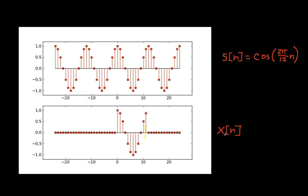Now when we do this windowing, the spectrum, or the Fourier transform of X, will not be the same as the Fourier transform of our original signal. So basically that's what we'll investigate in this video. In order to do this, we will use the multiplication theorem, which says that if we multiply two signals in the time domain — and we'll get X by multiplying S by a rectangular pulse — then in the frequency domain, we get the Fourier transform of the product by convolving the Fourier transforms of the individual signals.